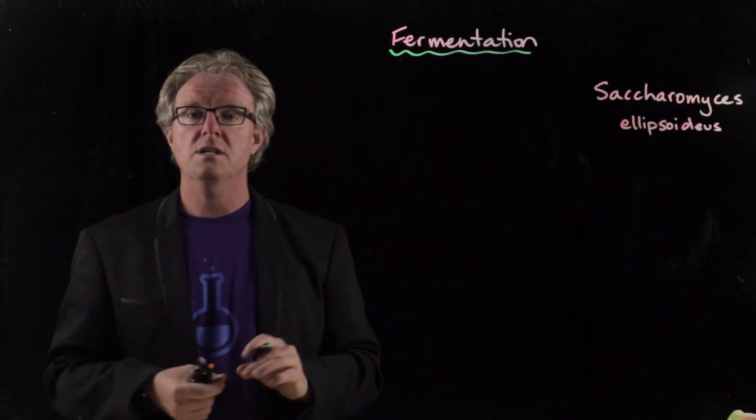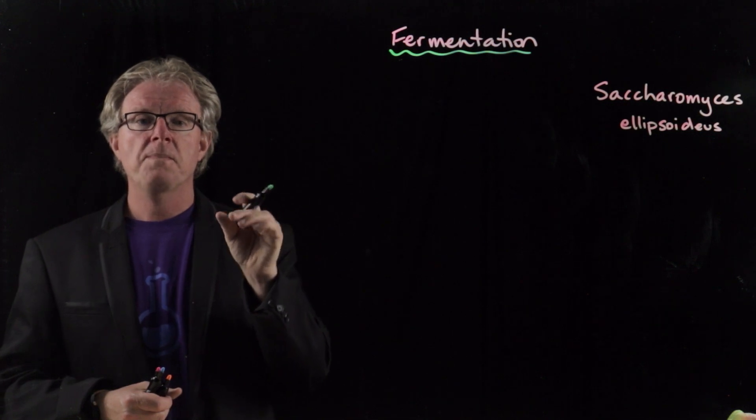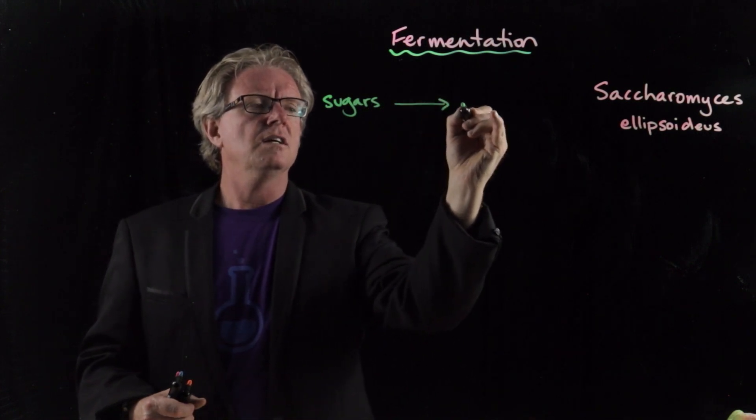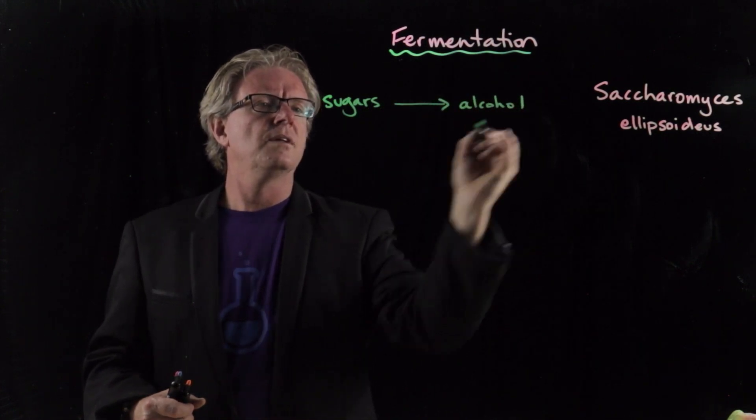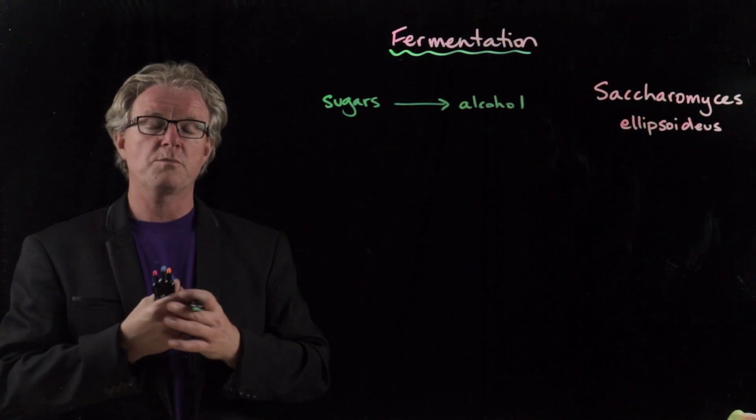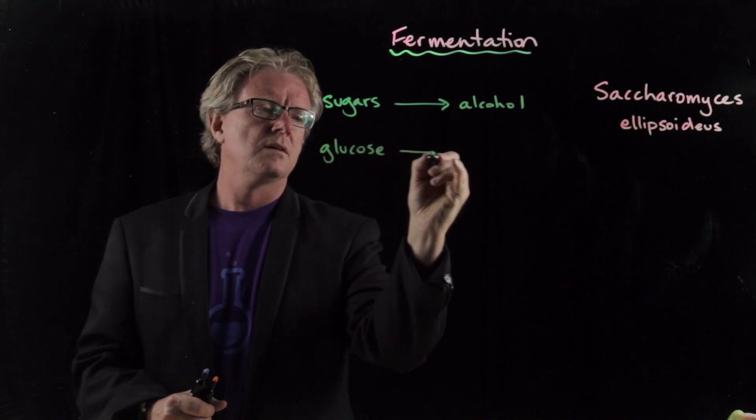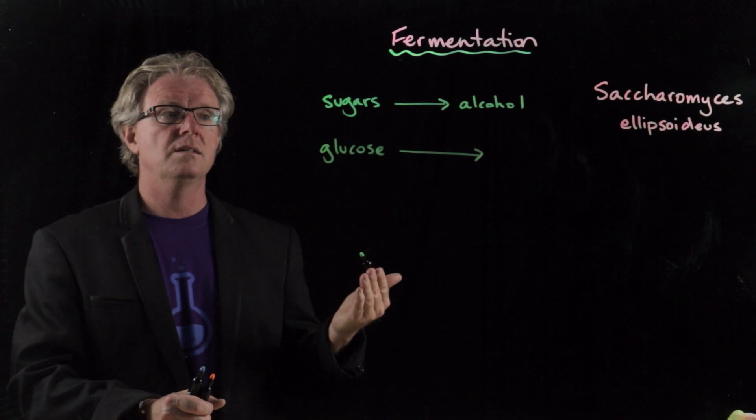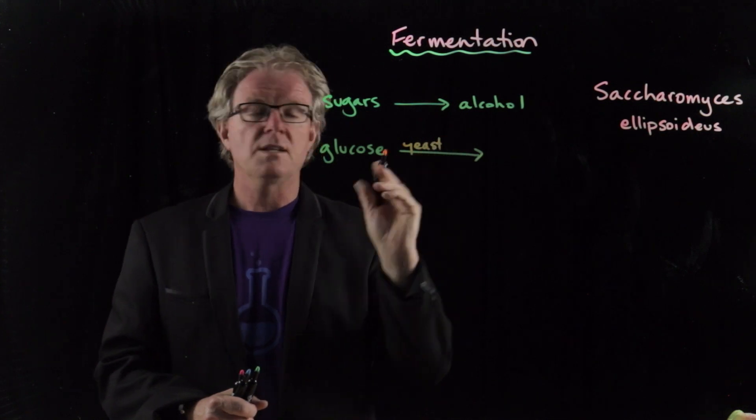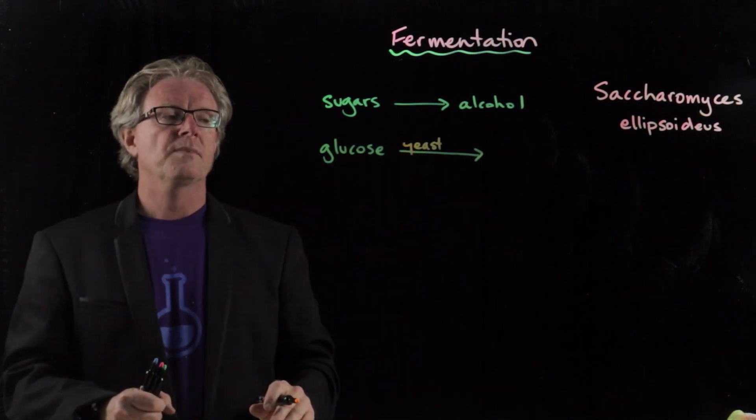All right, so fermentation is a chemical process which generates the production of ethanol through converting sugars into alcohol. Okay, so from a very basic description, sugars into alcohol. Specifically, we're going to be looking at glucose, right? But we can use sucrose and that sucrose then is broken down into glucose and then gets converted. So if we go glucose here, that glucose gets fermented by yeast. So we need yeast to do this.